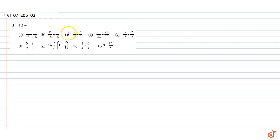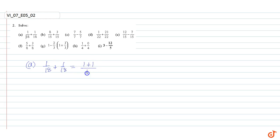In this question we have to add or subtract the given fractions. Part a: 1/18 plus 1/18 equals 1 plus 1 over 18, which equals 2/18, which simplifies to 1/9.